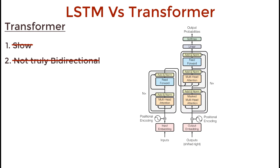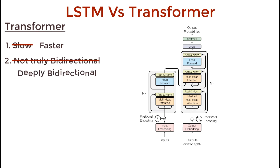First, they are faster as words can be processed simultaneously. Second, the context of words is better learned, as they can learn context from both directions simultaneously.